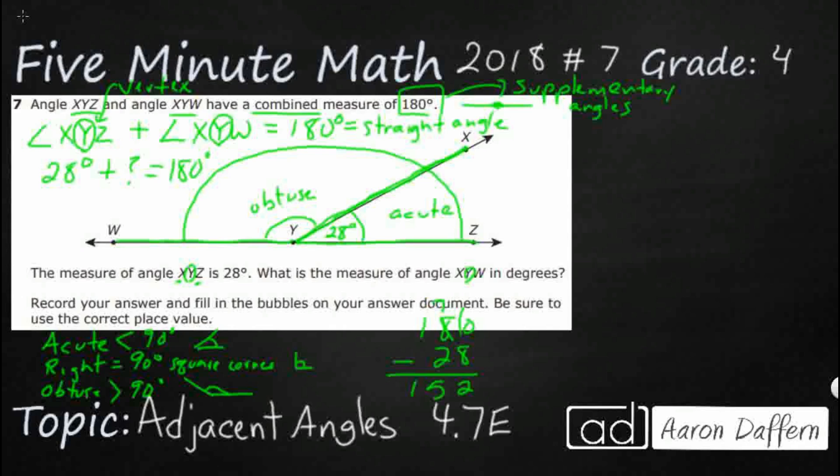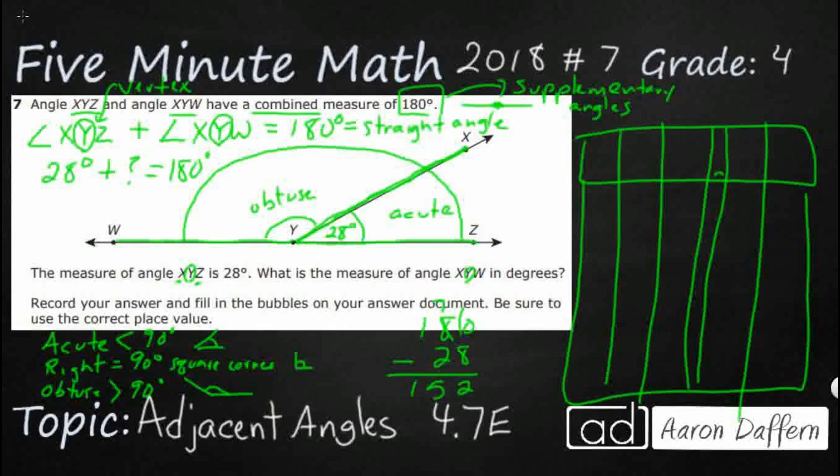The only tricky thing here is we've got our answer document that does not have A, B, C, or D. We're going to have to bubble it in here. So we just have to make sure we put it in the correct spot, in the hundreds spot: 152.